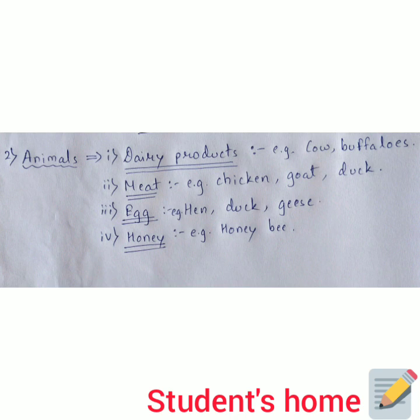Moving to point number three: eggs. We get eggs from hen, duck, and geese. We also know that the largest egg eaten by humans belongs to the ostrich.